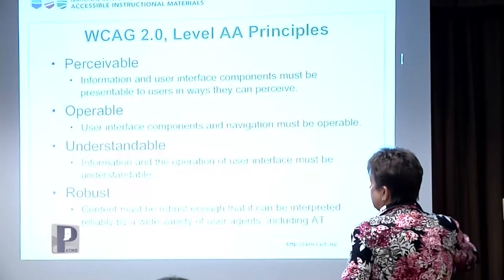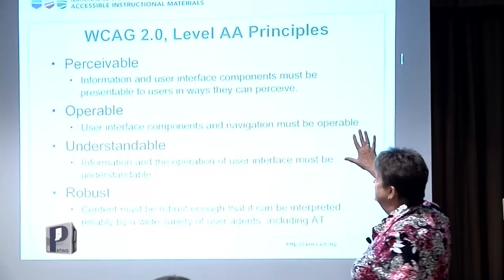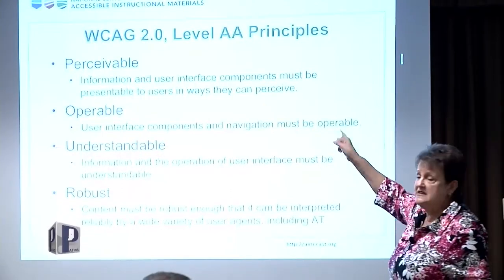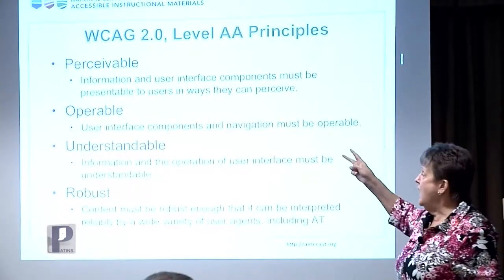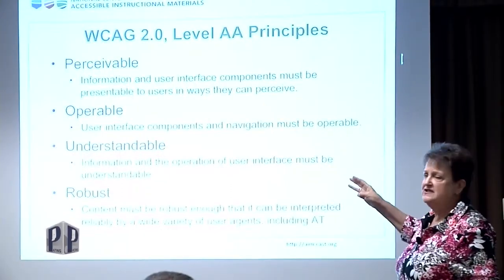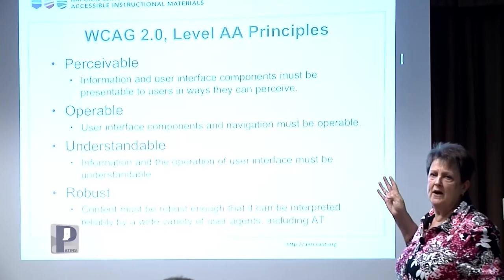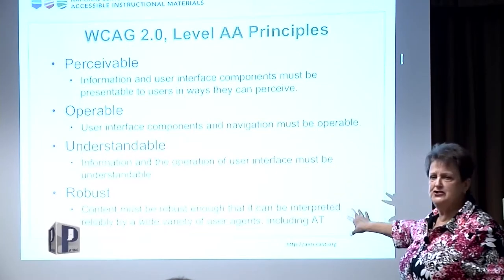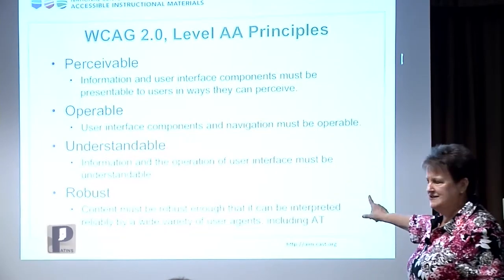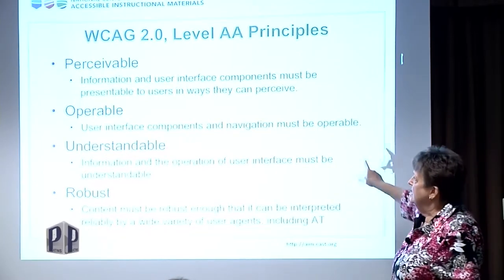Here's what WCAG 2.0 says: materials need to be perceivable, operable, understandable, and robust. I have an issue with 'robust,' and you'll see why in a moment. Perceivable means that the interface and the content must be presented in a way that the user can perceive — if you cannot see and all you have is visual content, obviously it is not perceivable for you.